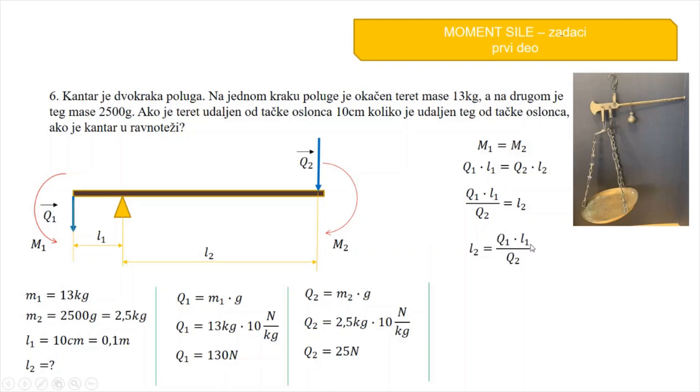L2 je jednako Q1 puta L1 kroz Q2. Sada mogu da menjam. Umjesto Q1 pišem ovo što sam dobio ovde, 130 N, umjesto L1, 0.1 m, a umjesto Q2, 25 N. 130 puta 0.1 je 13 i prepišen N i m, a dole je 25 N. 13 podeljeno sa 25 je 0.52 N i N se skrati i ostaje samo metar.